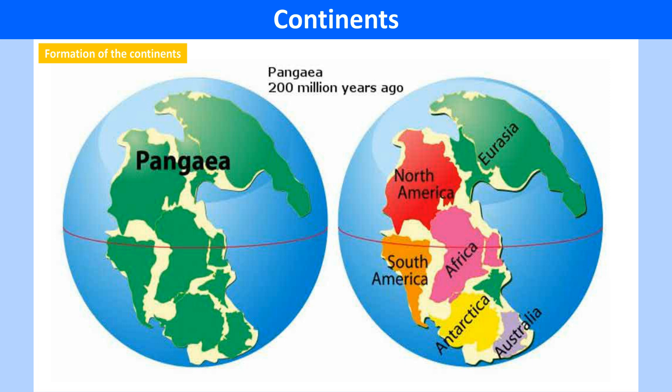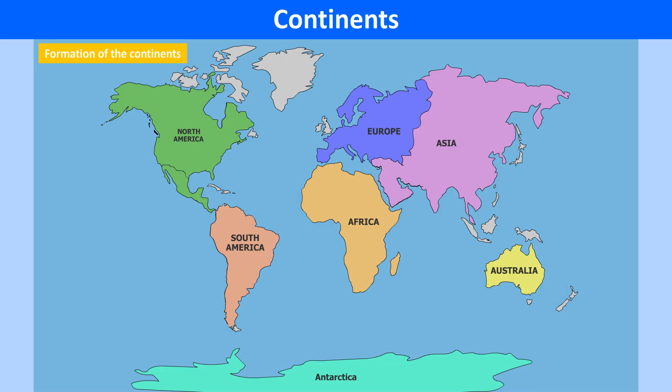There is evidence to support this theory. For example, the eastern coast of South America and the western coast of Africa look like they would fit together. Even though they are separated by an ocean, similar animals and plants are found in both the regions. Fossils of the same reptiles have been found in both South America and Africa.